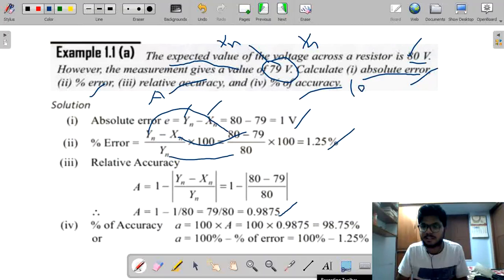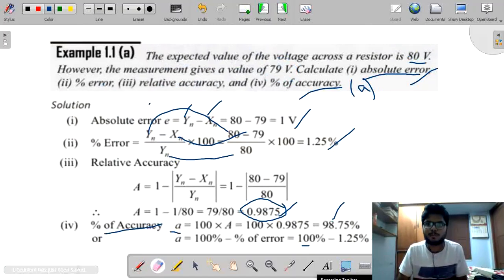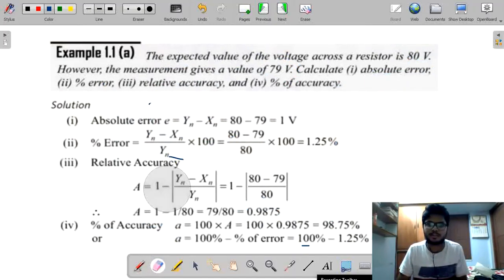Coming to percentage of accuracy. Percentage of accuracy is defined by small a. See, percentage of accuracy equal to small a. What I have said? Simply multiply capital A into 100. So, capital A value comes here as 0.9875 into 100. 98.75 percent. Or I have said here, 100 minus error percent. 100 minus, what is percentage of error? 1.25. From this also, we will get 98.75. Hope you understand this problem and the concept behind these errors.